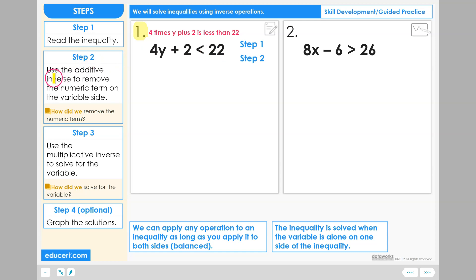Step 2. Use the additive inverse to remove the numeric term on the variable side. In this equation, the variable side is this left-hand side, and the numeric term is plus 2. To undo plus 2, the additive inverse will be to subtract 2, and we are going to use this on both sides because we can use any operation as long as we apply it to both sides, keeping the inequalities balanced. Subtracting 2 from both sides, we will arrive at 4y is less than 20.